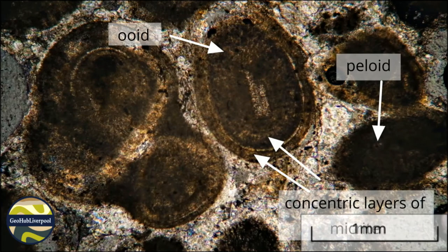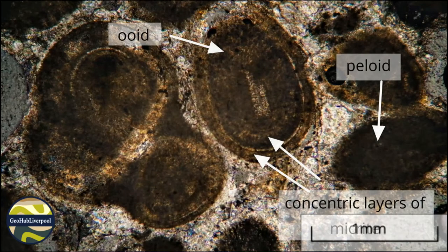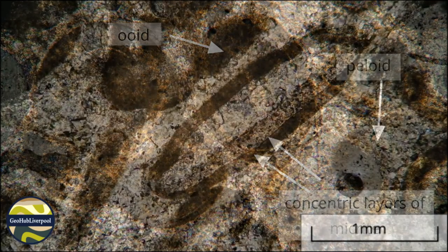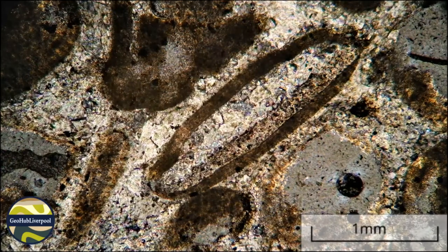which is a more elongated and rounded pellet of micrite. Both of these are non-skeletal grains and they are cemented together by calcite crystals.